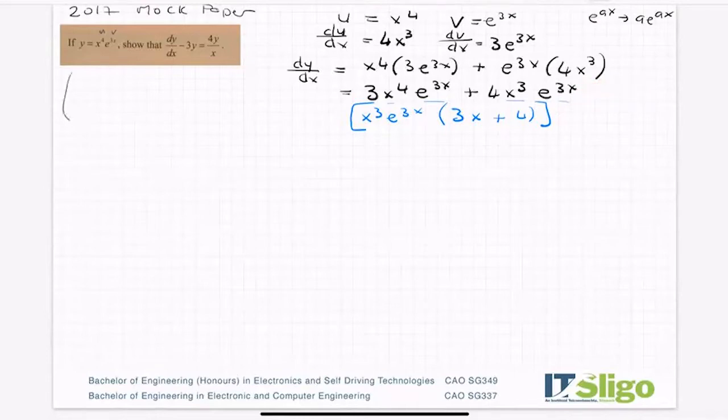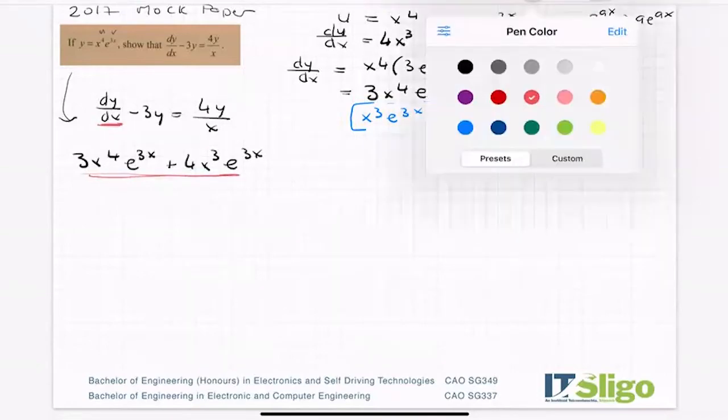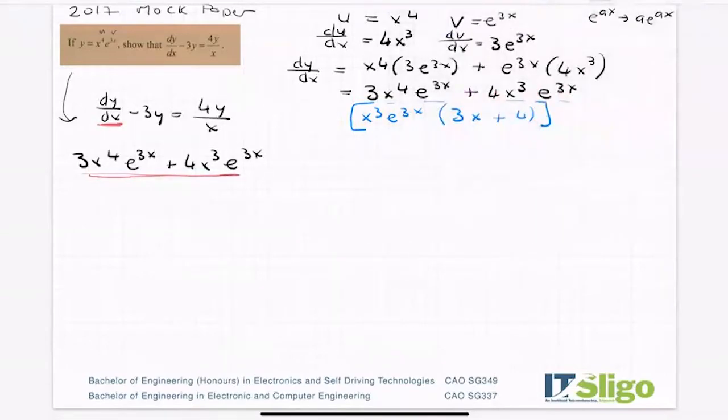Okay, so we have dy/dx minus 3 times y being equal to 4y over x. So for dy/dx, I'm just going to put in the black one for now. So 3x to the power of 4 e to the 3x plus 4x cubed e to the 3x. That's my dy/dx. I'm now going to go minus 3y. So it's minus 3 times y, which was given in the question x to the power of 4 e to the power of 3x.